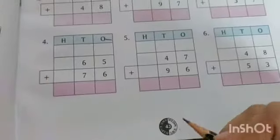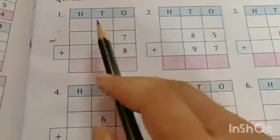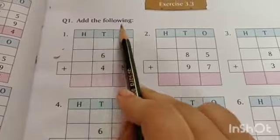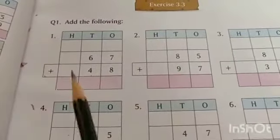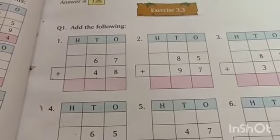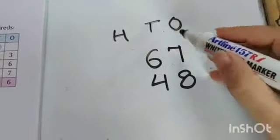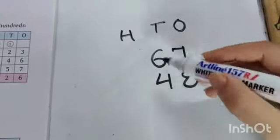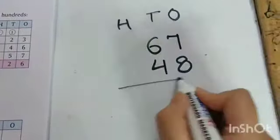Hello class again, how are you all? Hope everyone is fit and fine. Today we are continuing with chapter number 3, addition, on page number 43, exercise 3.3. The first question is add the following. Here we have to add two bigger numbers, 67 and 48. In 67, 7 ones and 6 tens. In 48, 8 ones and 4 tens. Let's add.